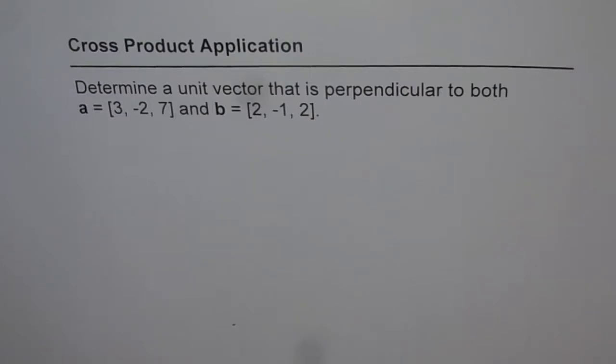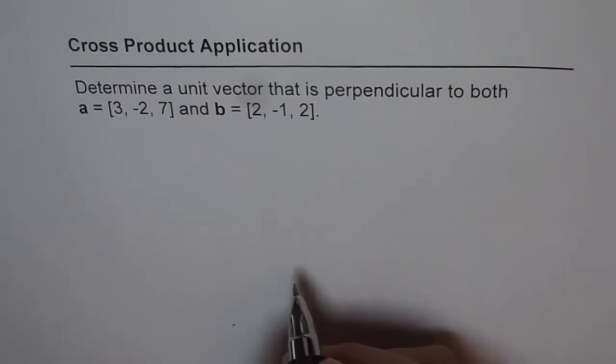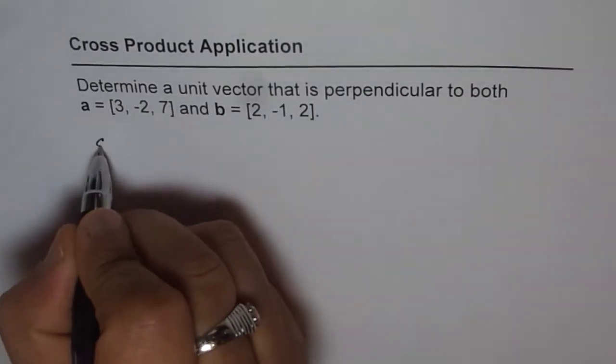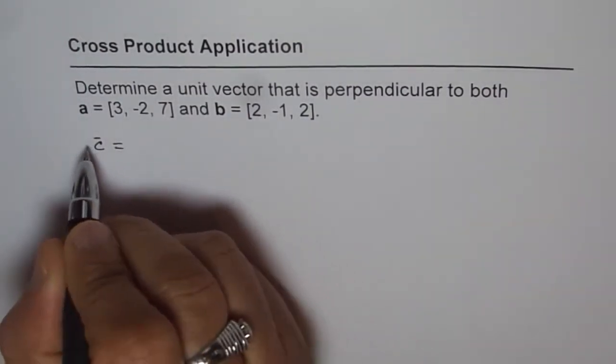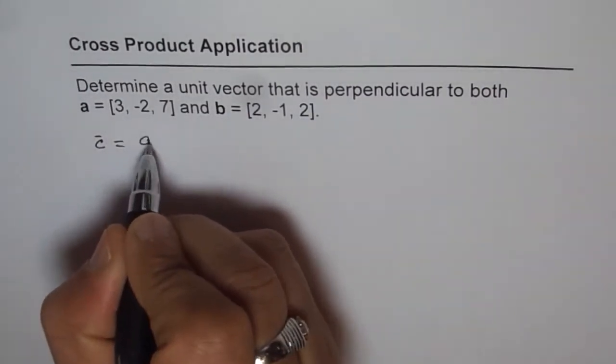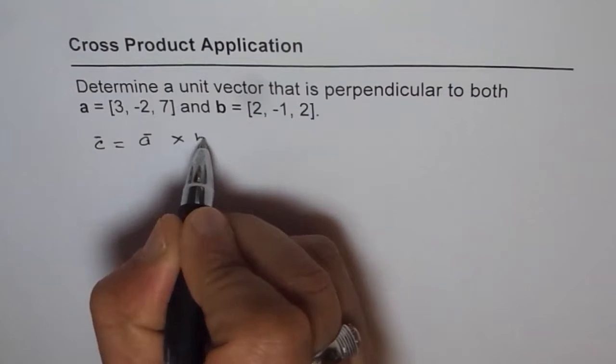Now, any vector perpendicular to two given vectors can be found easily with the help of cross product. So let's say that the unit vector is C that is perpendicular to both A and B. That means C should equal vector A cross vector B.